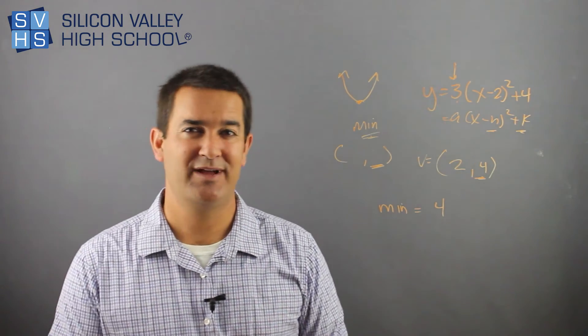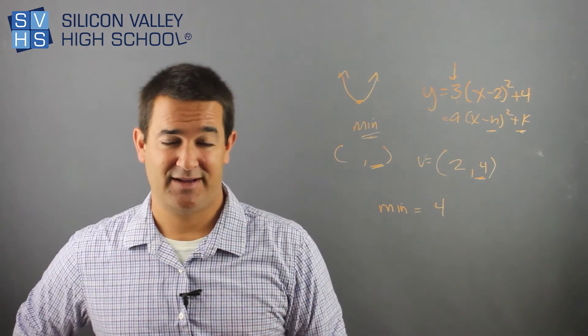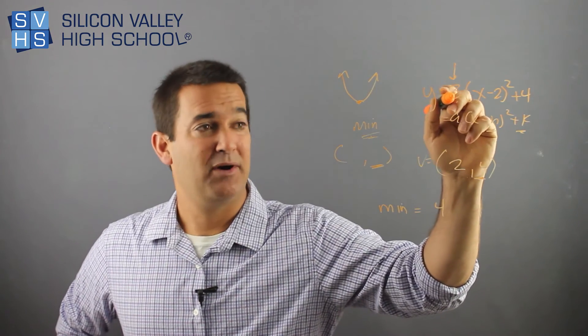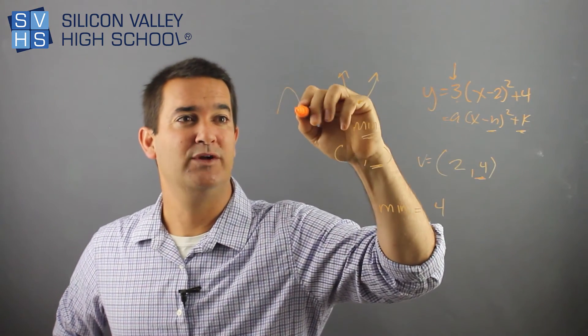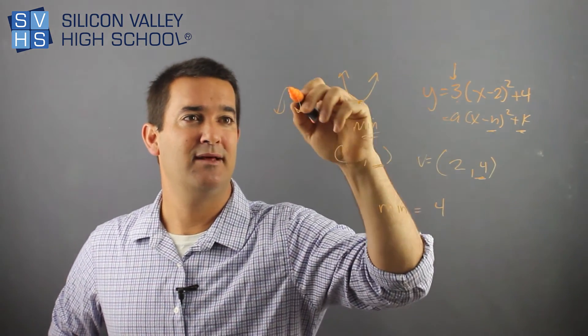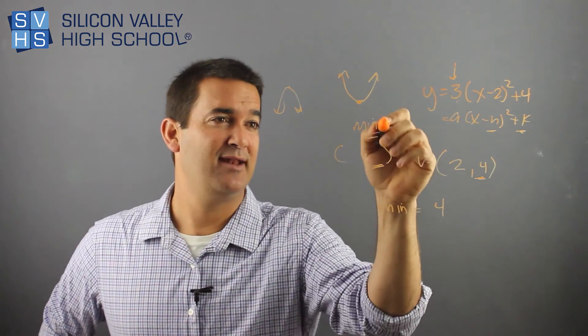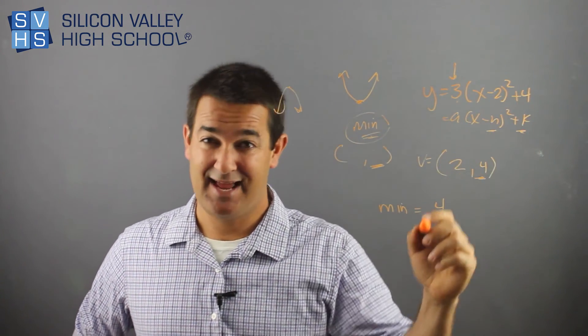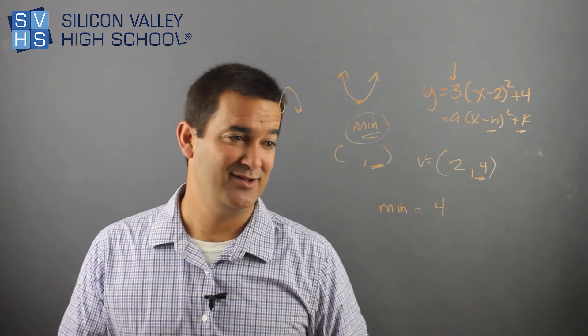Don't get confused by the wording in problems. But basically, the two steps to find the max or min is, do we have a positive or negative parabola? Min, max. Once I know that I have a min, then I find the vertex, and then that min is the y value. And that's it.